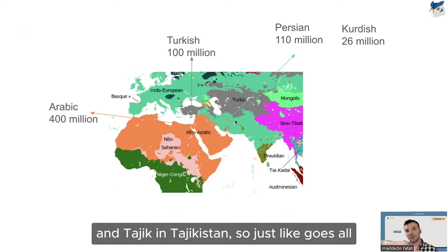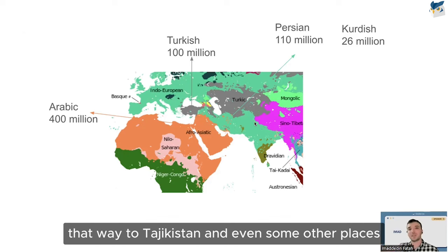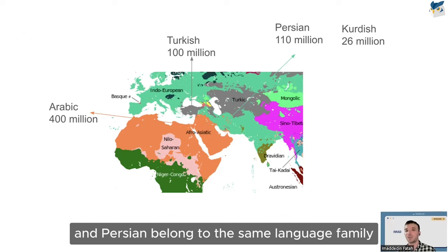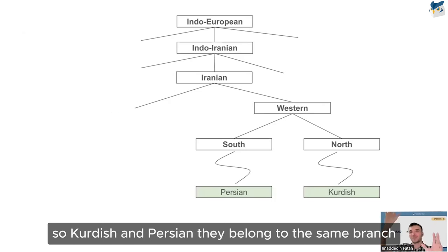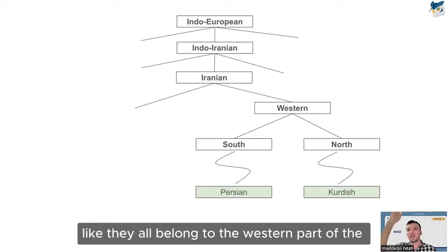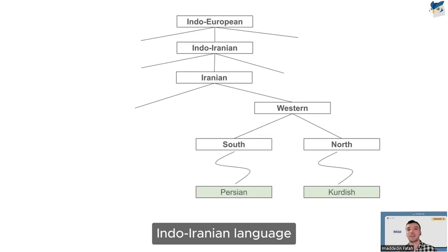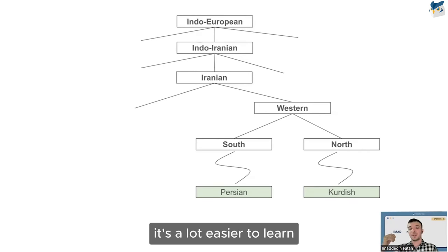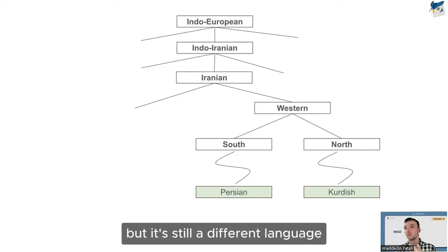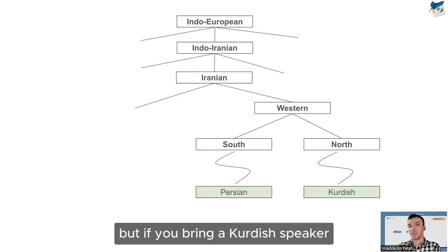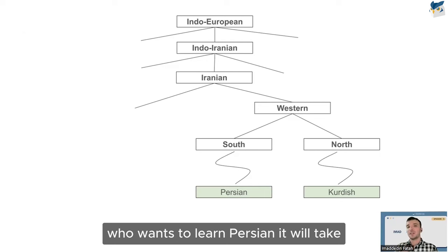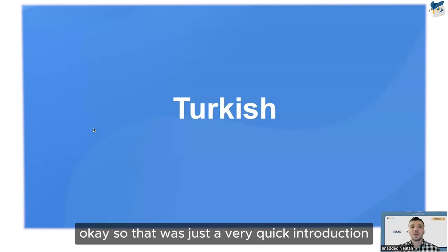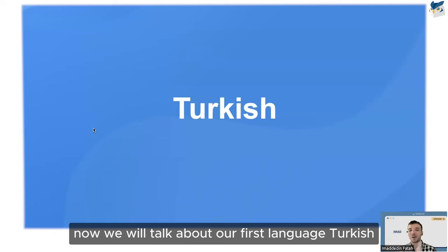Persian extends all the way to Tajikistan and beyond. It's important to remember that Kurdish and Persian belong to the same language family — specifically the western branch of the Indo-Iranian languages. That means they're very similar in grammar and share many common words. They're not mutually intelligible, but a Kurdish speaker wanting to learn Persian might take three to six months to become fluent, rather than two or three years.